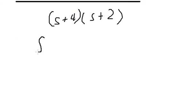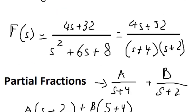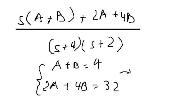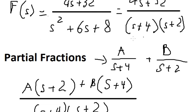For the constant term we have 2A plus 4B. Now we create the system of equations: A plus B equals 4, and 2A plus 4B equals 32. Solving these two equations, we get A equals negative 8 and B equals 12.